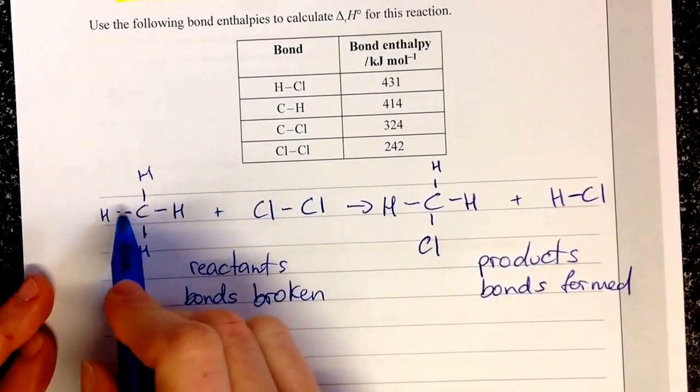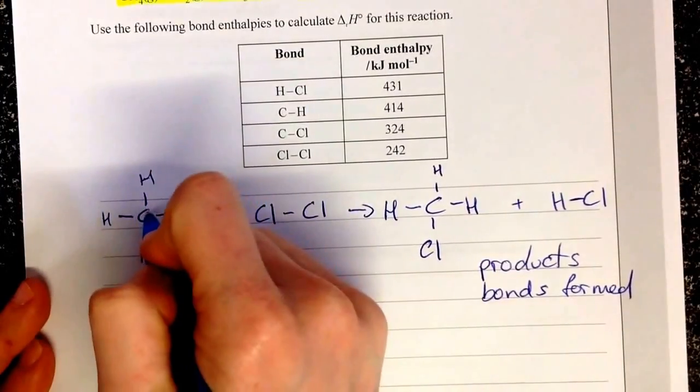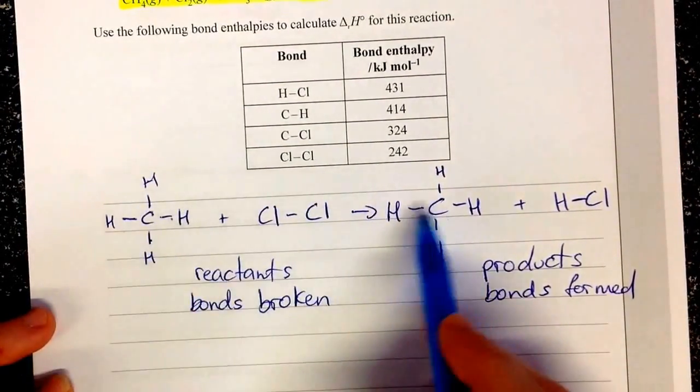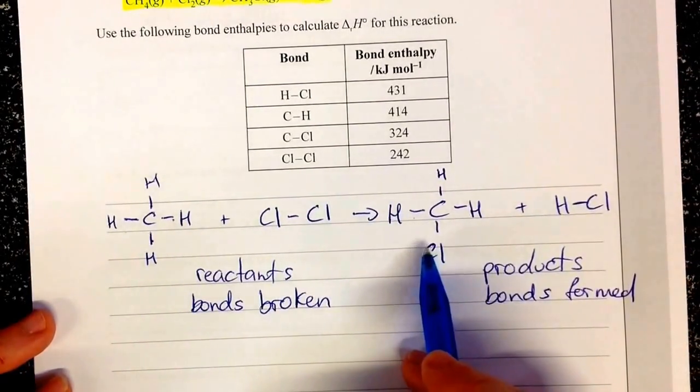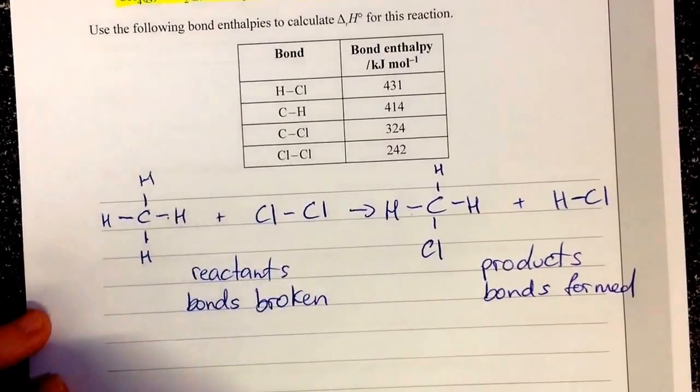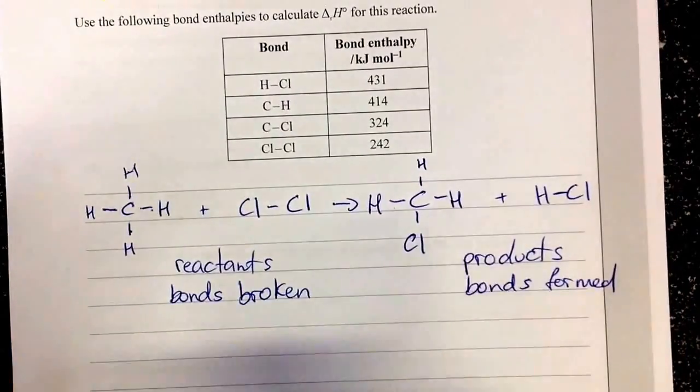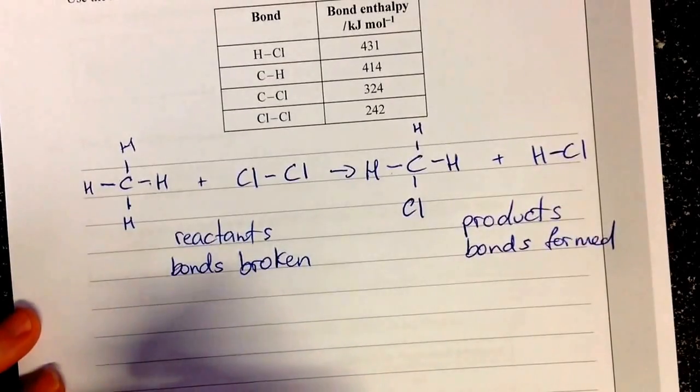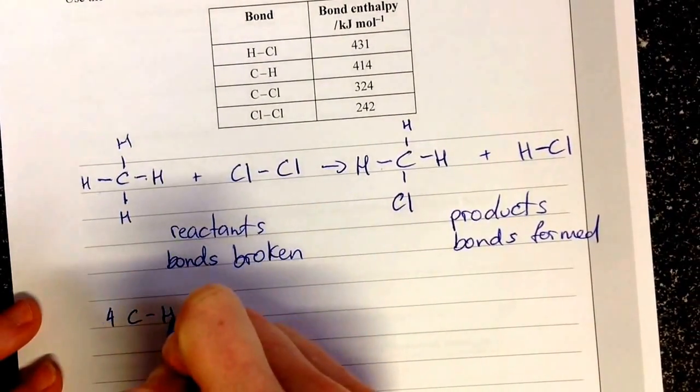I have four carbon to hydrogen bonds being broken. Now some of you will have been taught that you don't need to include three of these hydrogen bonds because we just add them on back here. But I prefer doing it that you break all of them and form all of them and therefore there are no complications. If you can handle not needing to do that or your teachers taught you not to do that, go with your teacher. I'm going to do it a different way. So I have four carbon to hydrogen bonds being broken on this side.